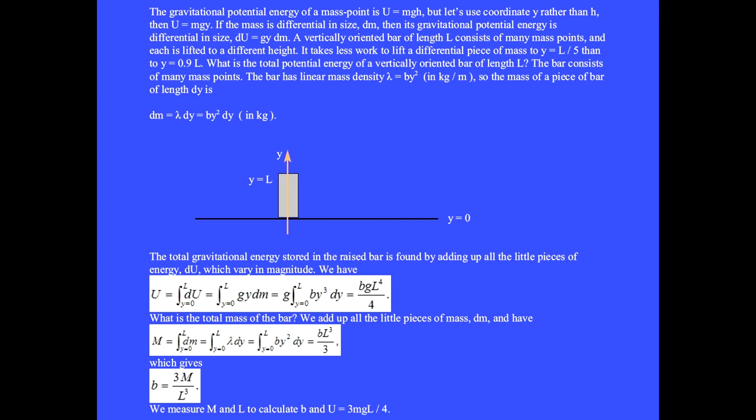We measure the total mass M and the length of the bar l to calculate b and u.